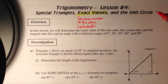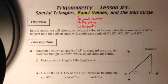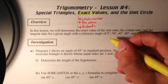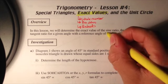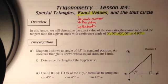We'll be talking about the unit circle, which we are going to be using for the rest of this chapter. In this lesson, we'll determine the exact value of the sine ratio, the cosine ratio, and the tangent ratio for given angles: zero degrees, 30 degrees, 45, 60, and 90. Triangles that have these angles are going to be considered special triangles.